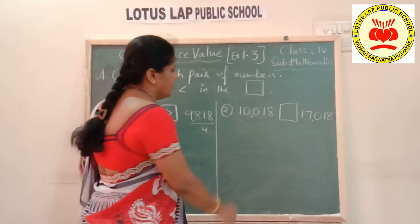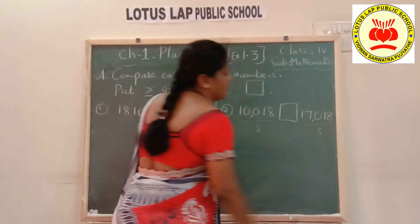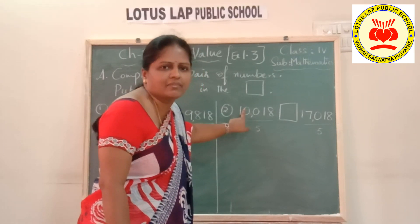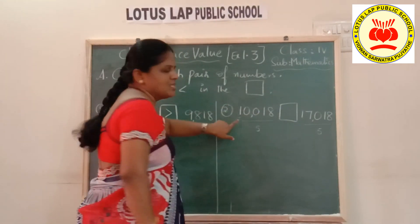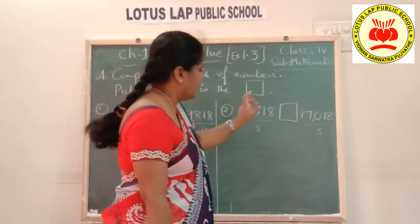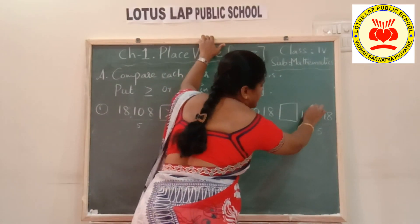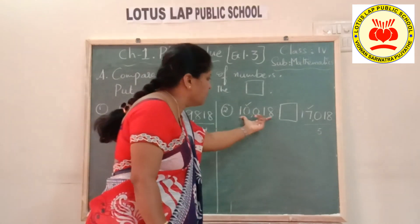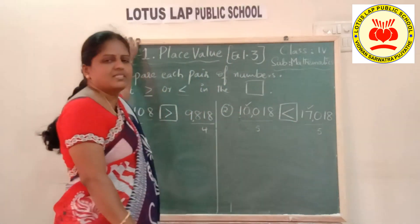Now the second question: both numbers have 5 digits each, so equal number of digits. We start comparing from the leftmost place, which is ten thousands. The digit in ten thousands place of the first number is one, and of the second number is also one — both equal. So compare thousands place: the first number has zero and the second number has seven. Zero is smaller than seven, so the first number is smaller than the second number. We put the smaller than symbol.